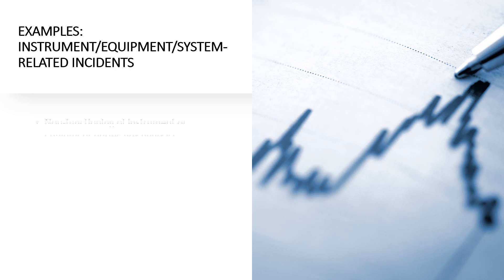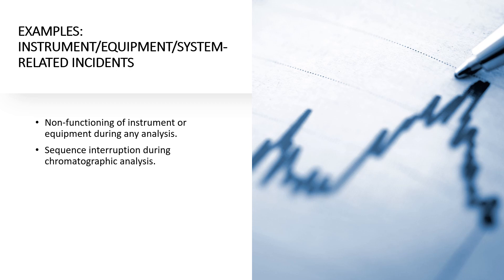Examples of instrument, equipment, and system-related incidents include: non-functioning of instrument or equipment during analysis — such as connectivity and communication failures, UPS failure, power failure, or operational software errors. Also, sequence interruption during chromatography analysis, resulting from power backup failure, pressure fluctuation, or column leakage. Additionally, system suitability failures — including similarity factor failure, resolution not achieved, asymmetry failures, theoretical plates not achieved, percent RSD of area failure, and retention time not achieved as per specification.